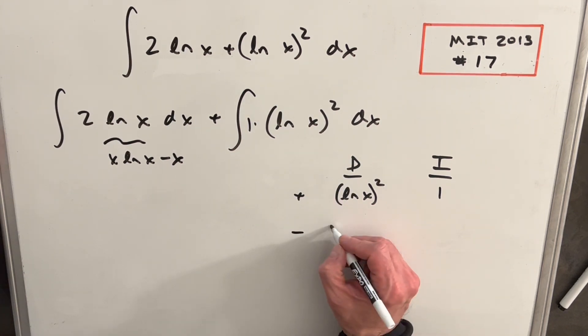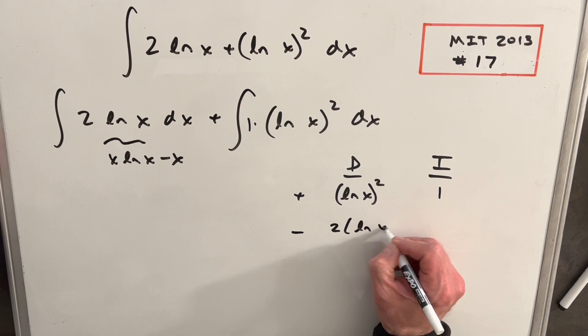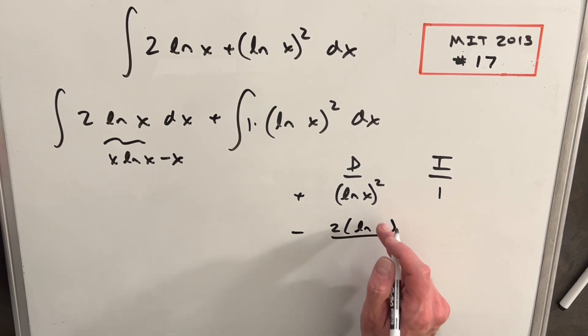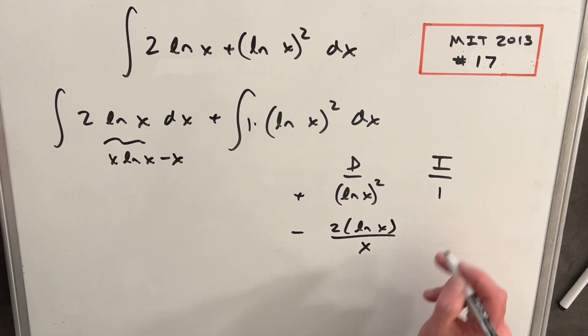Then taking the derivative over here, we're going to have 2 ln x. In general, the derivative of ln x is 1 over x. Integrating this, we're just going to have x. So we have part of the answer here.